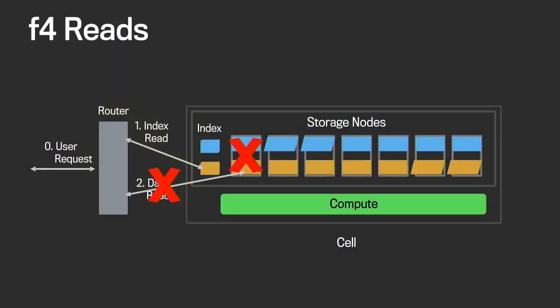What happens if the storage node containing the blob is down or the disk is down? In that case the data read stage will fail, and the router will issue one more request: a decode read request to the compute nodes. Once a compute node gets the decode read request, it performs Reed-Solomon decoding from the peer stripe blocks and sends the data to the router. The compute nodes and specifically the decode read stage make a cell fault tolerant to disk failure, host failure, and even rack failures.